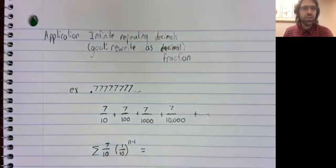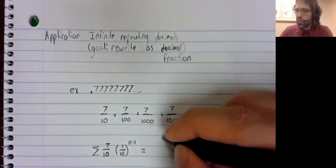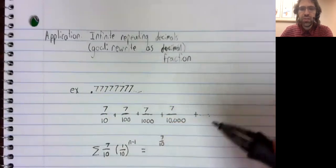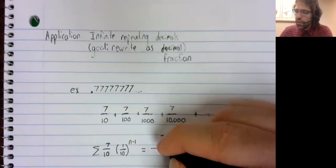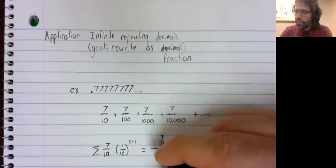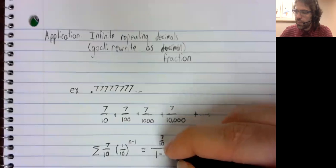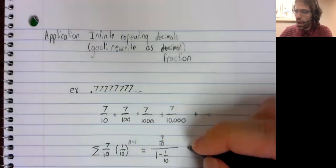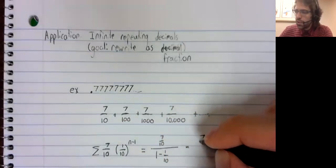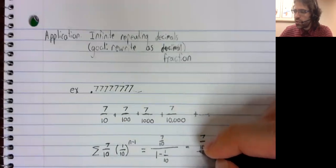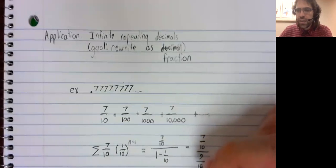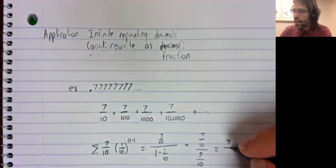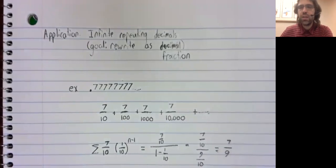One-tenth is less than one in absolute value, so it converges to a divided by one minus r. The numbers are seven-tenths over nine-tenths, or seven-ninths.